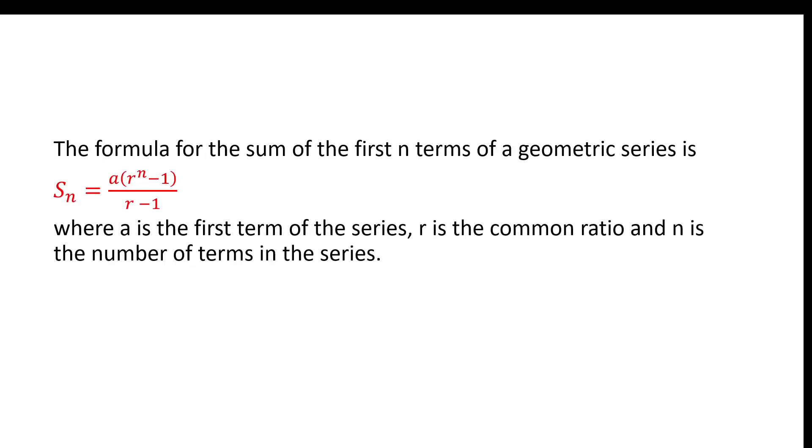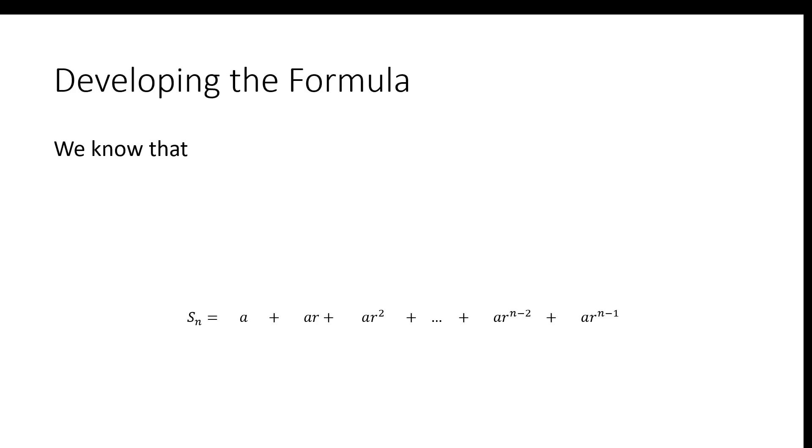Now the formula for the sum of the first N terms of a geometric series is shown in red. S_N equals A times R to the N minus 1 divided by R minus 1, where A is the first term of the series and R is the common ratio. N is the number of terms in the series. Now let's develop this formula. We're going to do it in a pretty cool way.